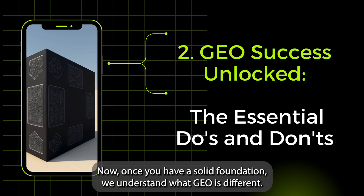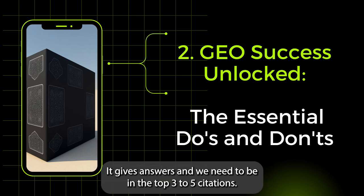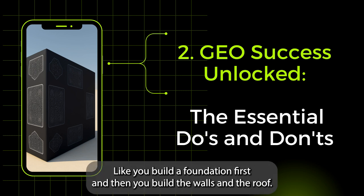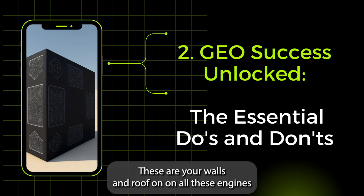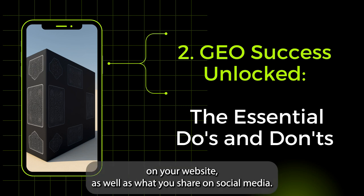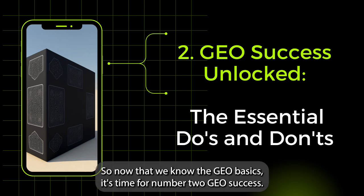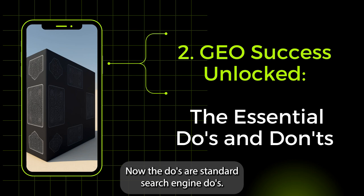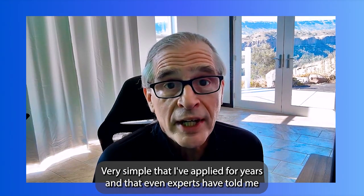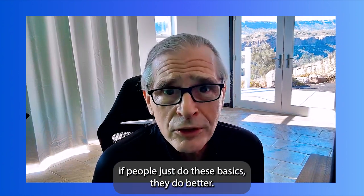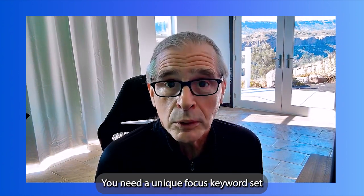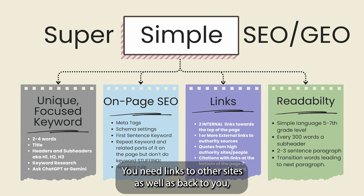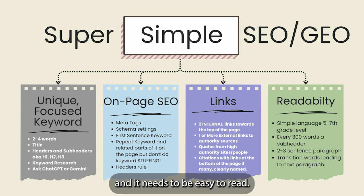Once you have a solid foundation and understand what GEO is — it gives answers, and we need to be in the top three to five citations — the next part of your blueprint is building the structure. Like a foundation first, then walls and roof. These are your walls and roof on all these engines, for your website content as well as what you share on social media. Now that we know the GEO basics, it's time for number two: GEO Success Unlocked, the essential do's and don'ts.